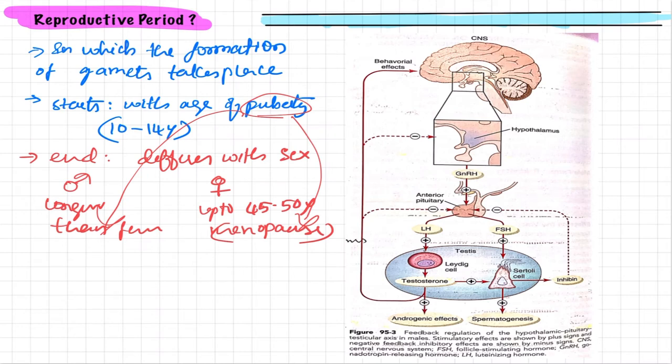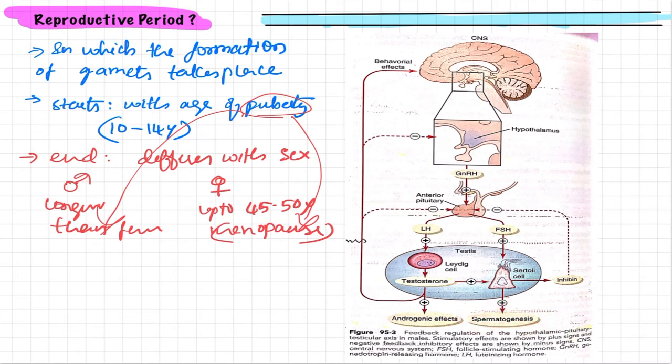The function of FSH in males is that it stimulates and acts on the Sertoli cells. As a result, these Sertoli cells have a positive effect on spermatogenesis.